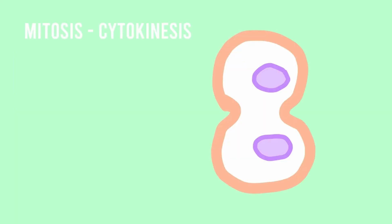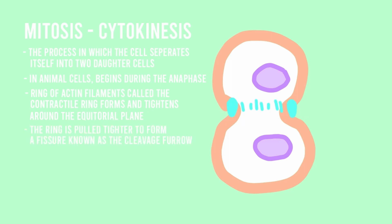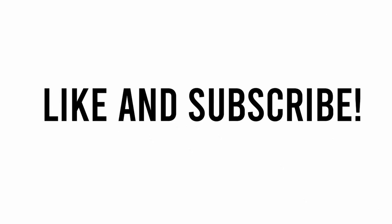Let's move on to cytokinesis. As we discussed before, the second portion of the mitotic phase, called cytokinesis, is the process in which the cell physically separates itself into two daughter cells. For animal cells, cytokinesis begins during the anaphase, where a ring of actin filaments called the contractile ring forms and tightens around the equatorial plane. This ring is pulled tighter and tighter by motor proteins to form a fissure known as the cleavage furrow, until the two daughter cells completely separate from each other.